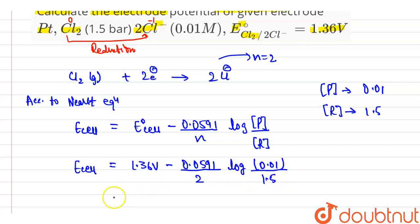Now solving, we get 1.483 V. So the EMF of the cell is 1.483 V.